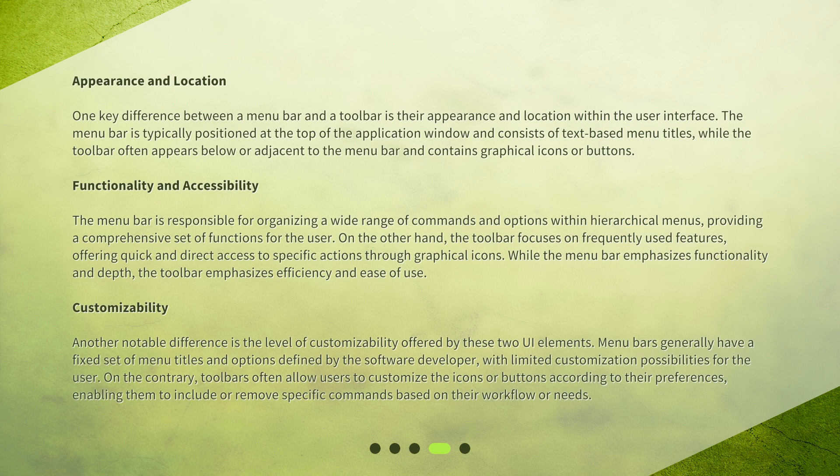One key difference between a menu bar and a toolbar is their appearance and location within the user interface. The menu bar is typically positioned at the top of the application window and consists of text-based menu titles, while the toolbar often appears below or adjacent to the menu bar and contains graphical icons or buttons.